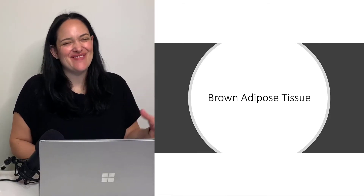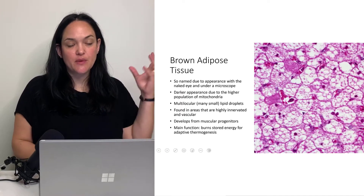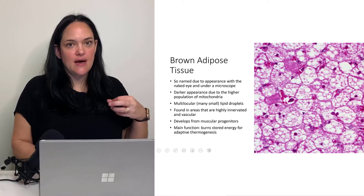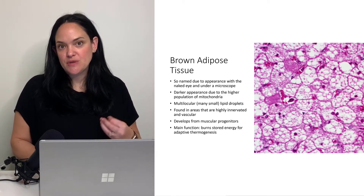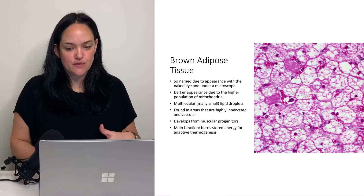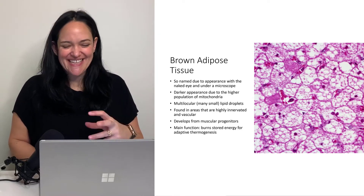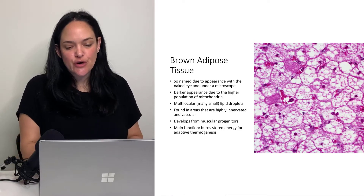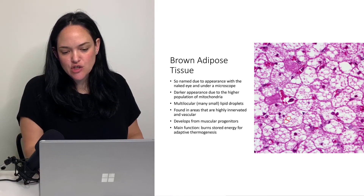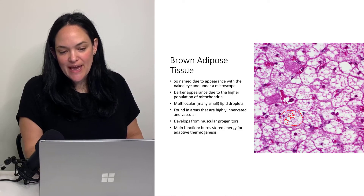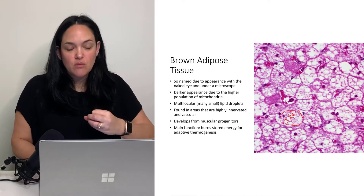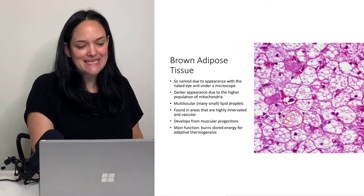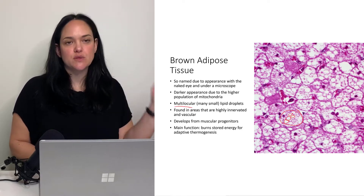Brown adipose tissue is a lot less common than white adipose tissue — less than about 5% depending on the person. Brown adipose tissue gets its name because it looks darker under a light microscope. It looks darker because there are a lot more smaller lipid droplets within the cell, and a lot more mitochondria as well, adding to that darker appearance. The higher amount of lipid droplets makes it multilocular instead of unilocular, which we see in white adipose tissue.